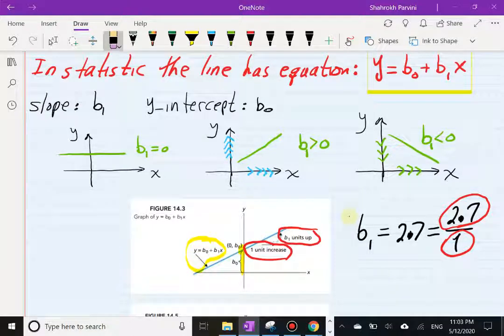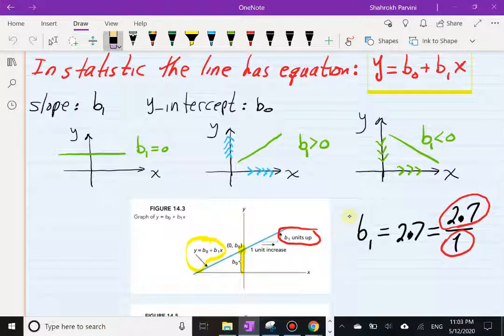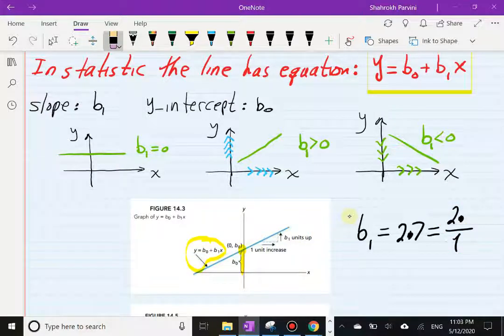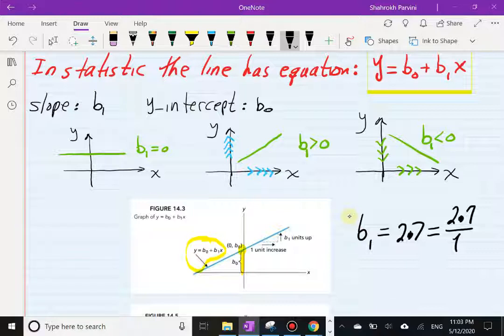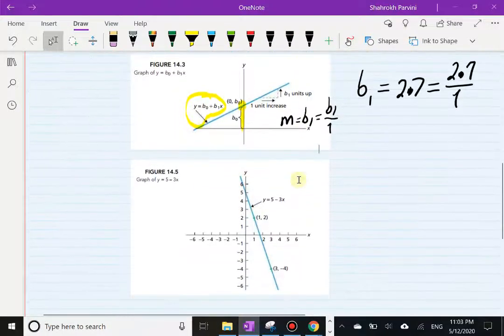If I have a number like 2.7, that 2.7 we're going to look at as a change in y over denominator always one, which is the change in x. Keep in mind, in our work we always keep a one unit change in x, and we always look at one unit increase. That's what this is, just to clear the notion of slope is b1, which is b1 over one.